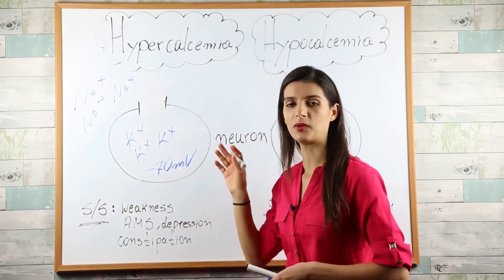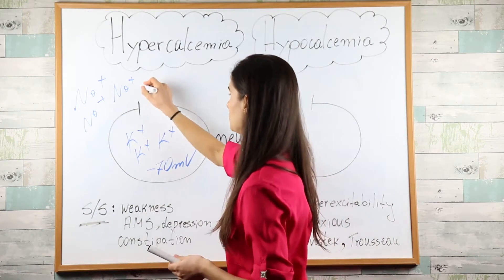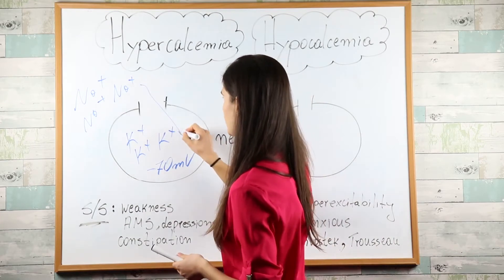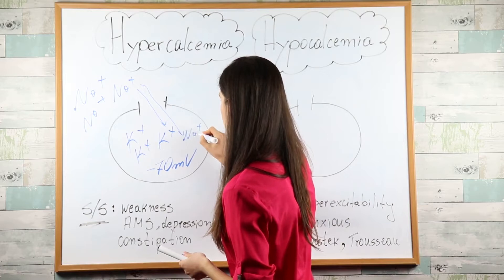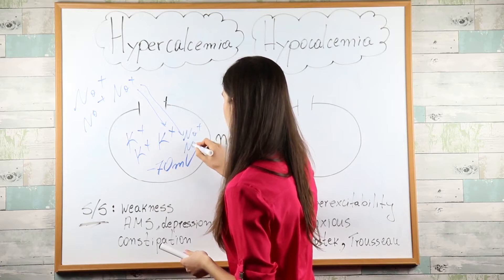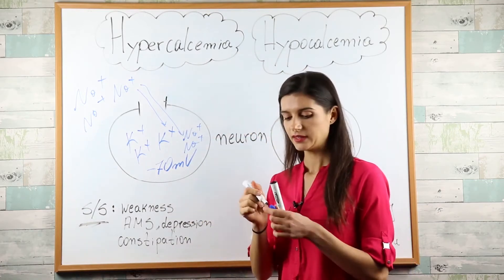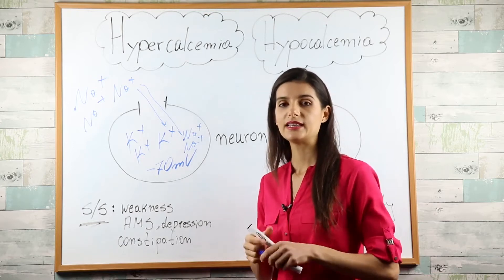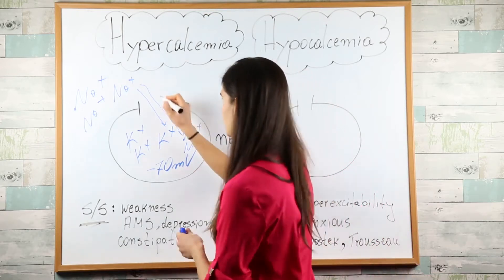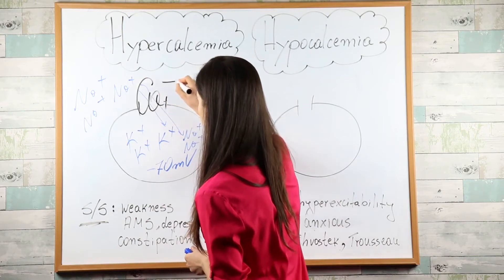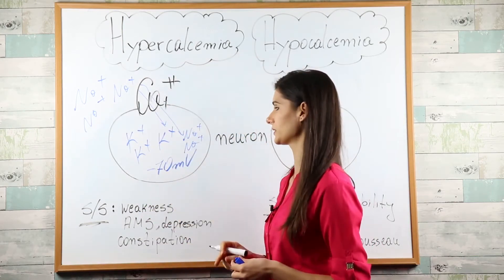In order for this neuron to depolarize — meaning to fire — you need the sodium to come inside the cell, and it does so via this sodium channel. It depolarizes the neuron and the neuron starts firing. Now what happens normally is when you want this process to cease, calcium comes and sits on top of this channel and blocks it, stopping the sodium influx.